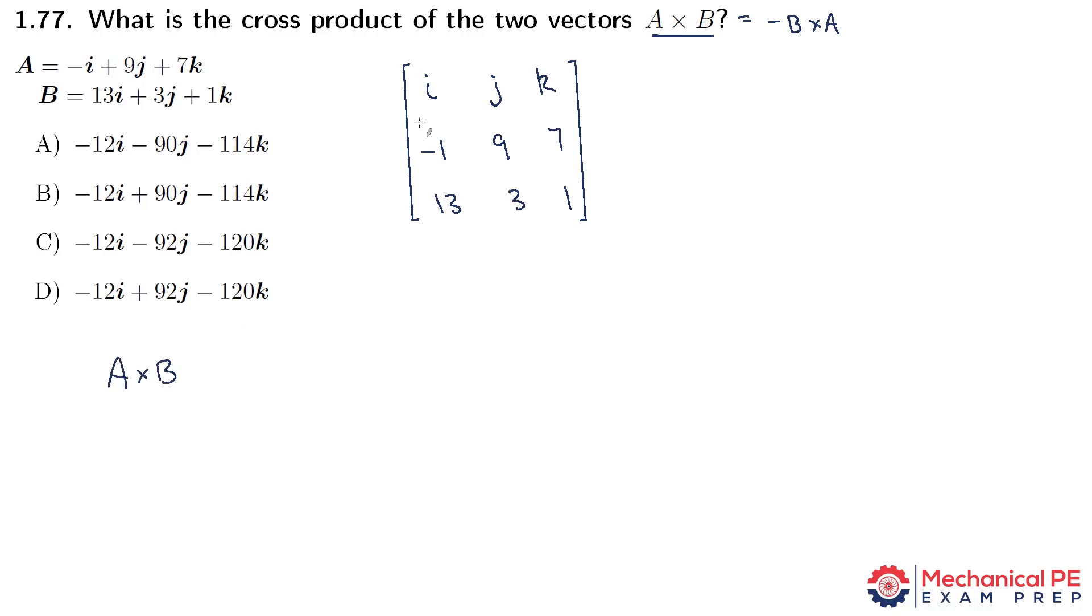A cross B is going to be i times the discriminant of, so you cross out the first column and you cross out the first row, and what's left over is just 9, 7, 3, 1. And then we find the discriminant of that 2 by 2 matrix, which is 9 times 1 minus 7 times 3. So let's do that math in our heads so we have less to write down. 9 times 1 is 9 minus 21, that's negative 12.